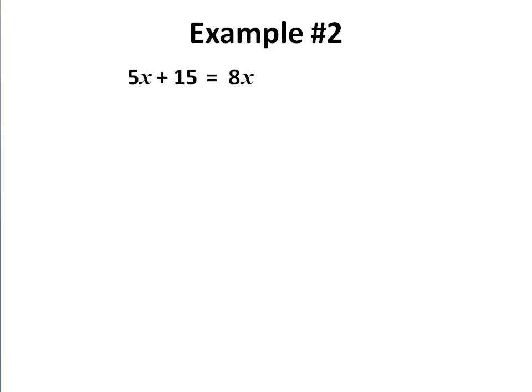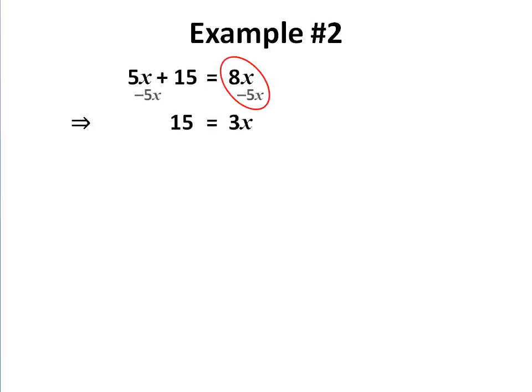Let's do it again. This time we've got unknowns on both sides, so we're going to group the unknowns rather than numbers, which means we're going to subtract 5x from both sides. That removes the 5x term, leaving the 15 where it was, and 8x minus 5x is 3x. Note that because I do the work with the x written in, I cannot accidentally remove it from the next step.